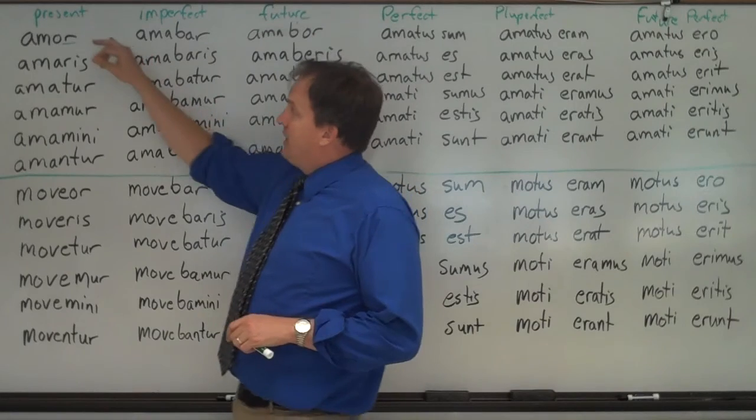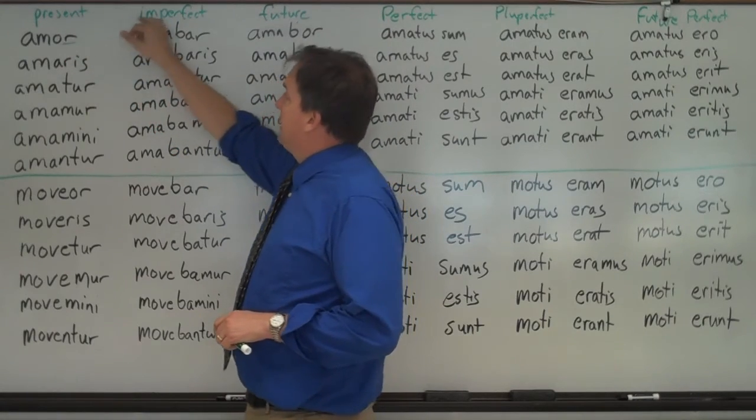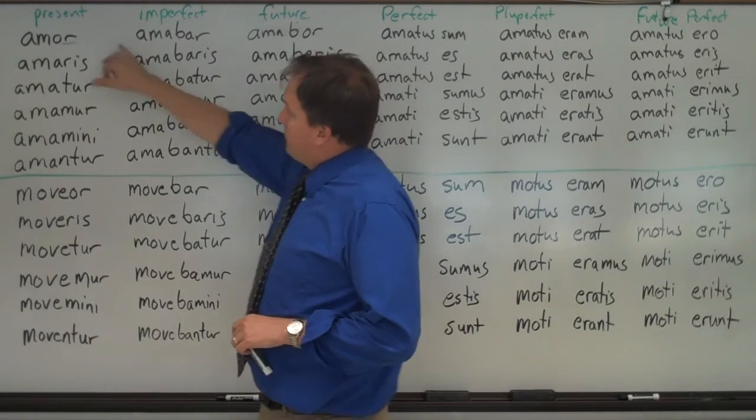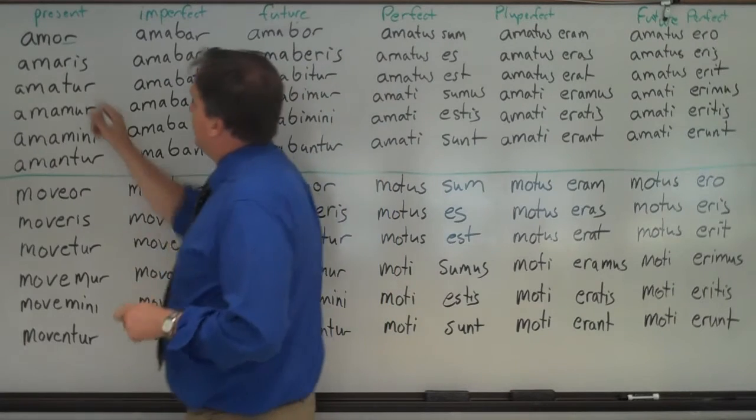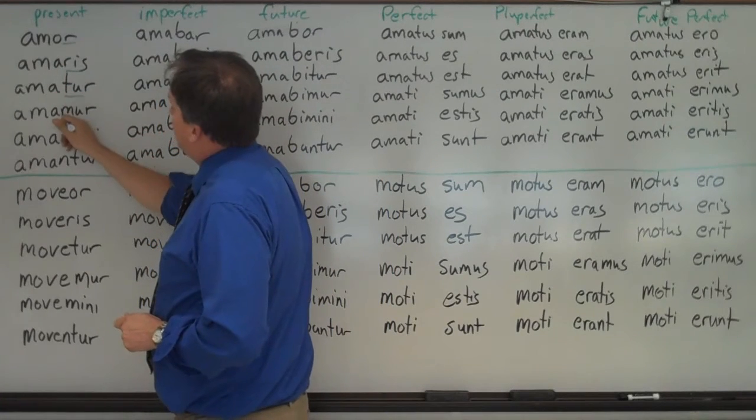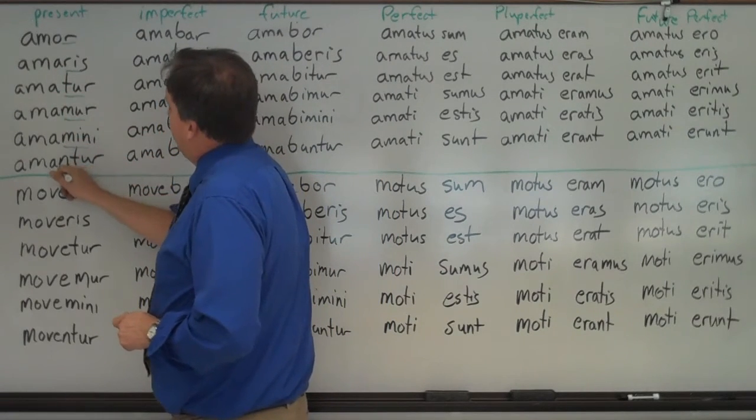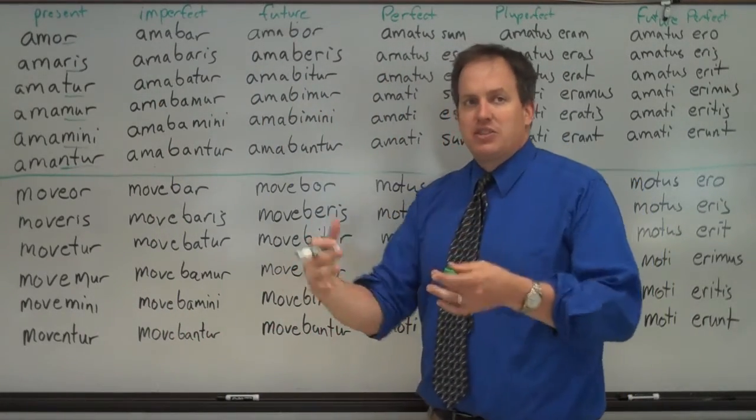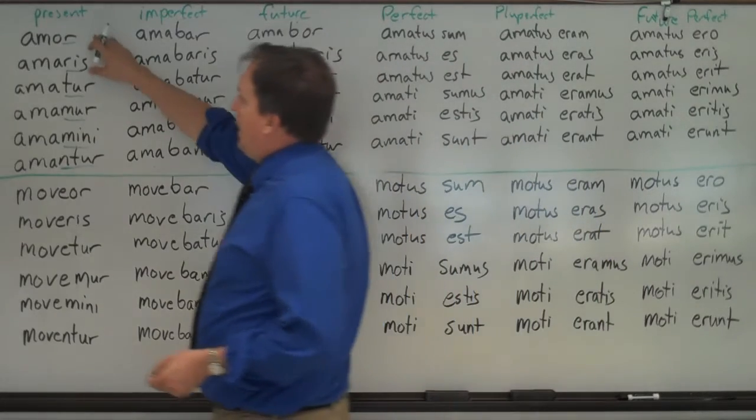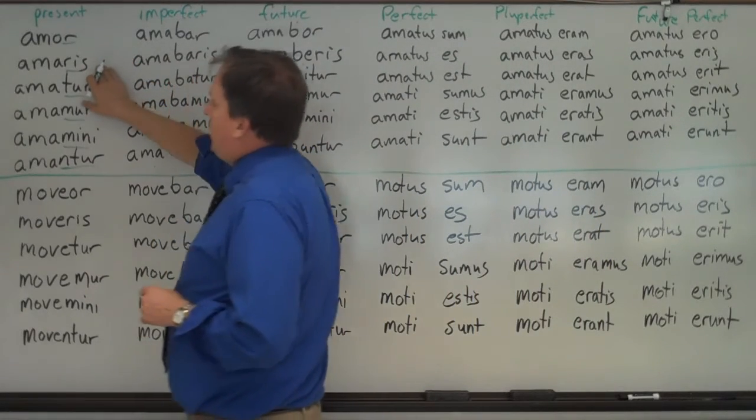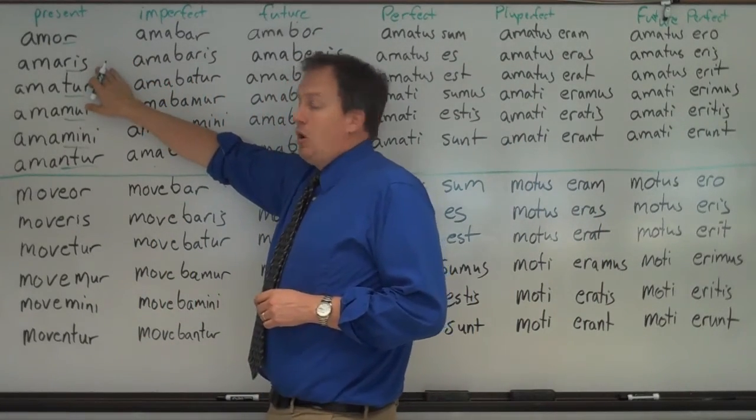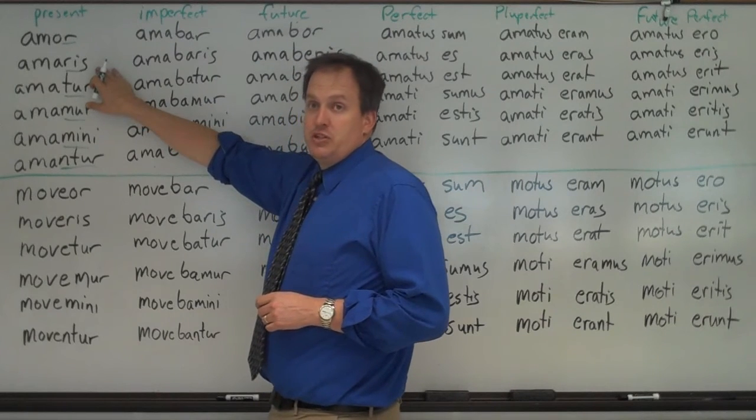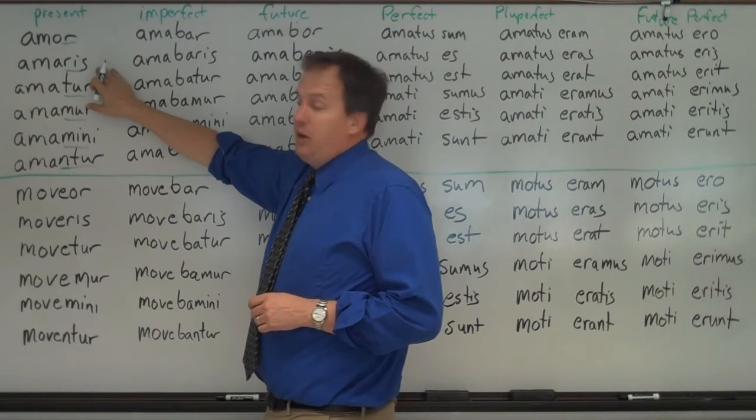We're looking for the endings for the present, imperfect, and future. Just remember it goes ar, ris, tor, mor, mini, entor. And that signifies that instead of I love something, amor, I am being loved. Amaris, you are being loved, versus amas, you love.